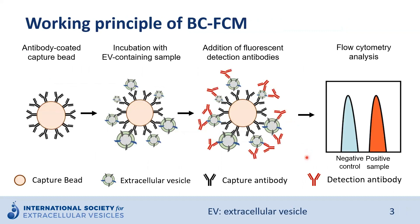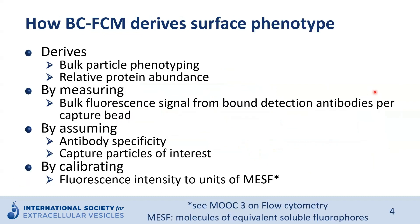Let's have a closer look at this workflow here again. Antibody-coated capture beads are incubated with EV-containing samples. Following a washing step to remove unbound EVs, fluorescent detection antibodies are added. And if the sample contained enough EVs that are bound both by the antibodies on the capture beads and the detection antibodies, flow cytometry analysis then provides a quantifiable shift of fluorescence between negative control and a positive sample. Taken together, bead-based flow cytometry derives bulk information about EV surface phenotype and relative abundance of protein by measuring bulk fluorescence derived from bound detection antibodies per bead, with normally multiple EVs captured per capture bead.